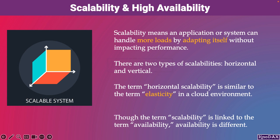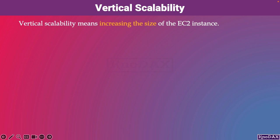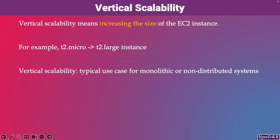With respect to EC2, vertical scalability means increasing the size of the EC2 instance. For example, if your application runs on a T2 micro instance, then vertically scaling means running the application on, say, a T2 large instance. Vertical scalability is a typical use case for systems that are monolithic type or non-distributed. Usually, vertical scalability is used to scale the performance of databases.